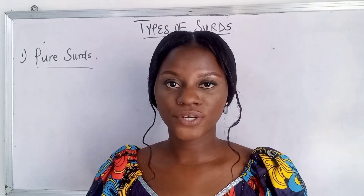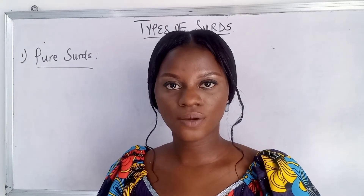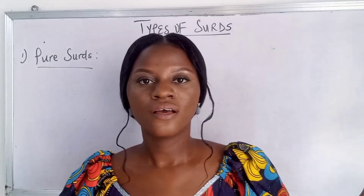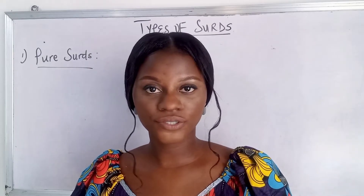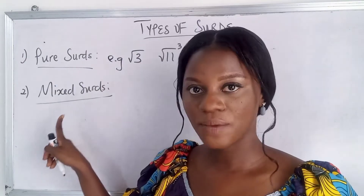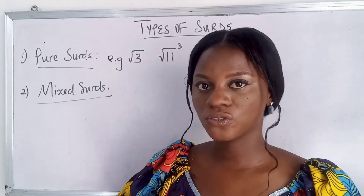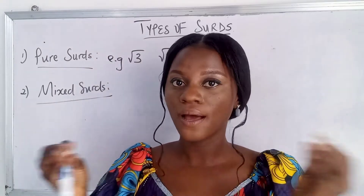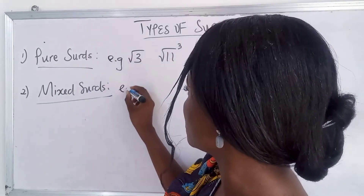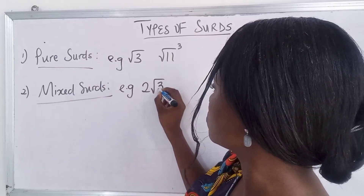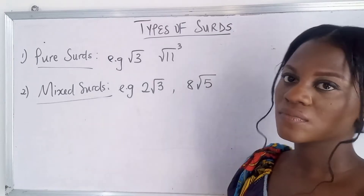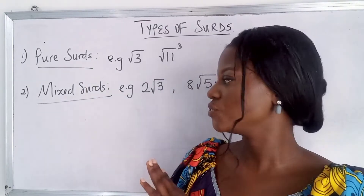Before we dive into addition and subtraction of surds examples, let's talk about the three common types of surds. The first is pure surds — this is a situation where you have just a single irrational number. The next type is mixed surds, where you have an irrational and rational number mixed together. For example, two root three — two is your rational number and root three is your irrational number.